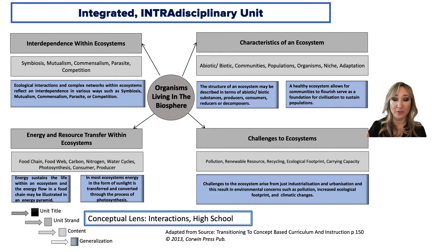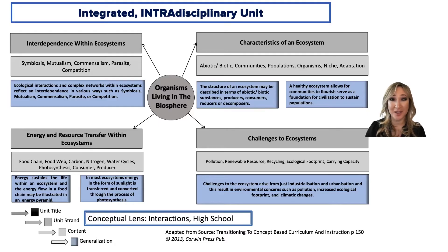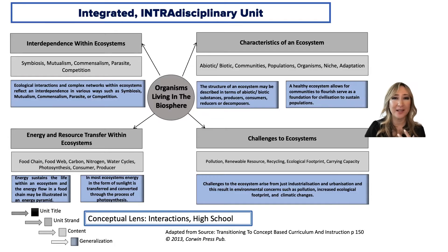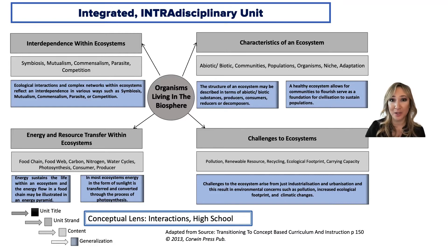What I've done is I've just transferred this into a web and then I've added some generalizations that I've tried to craft based on the concepts that have been listed. For example, when we look at interdependence within ecosystems, I said that students understand that ecological interactions and complex networks within ecosystems reflect an interdependence in various ways such as symbiosis, mutualism, commensalism, and parasitism. And so that is the understanding that you want students to be able to have and to take away from their learning experiences.